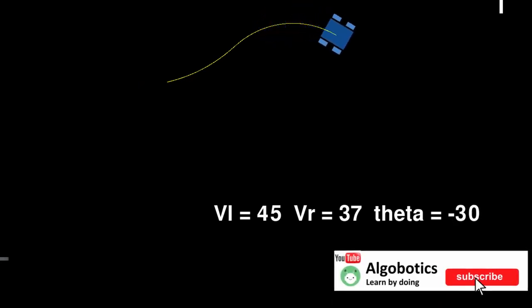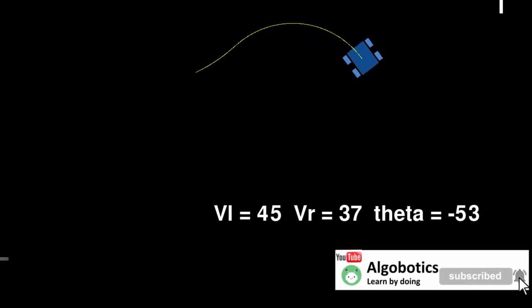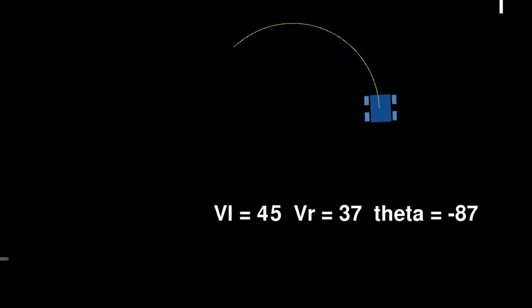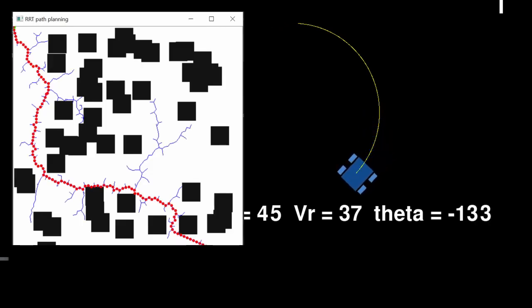It can move in the environment either controlled manually by the user using keyboard strokes, or we can use path planning algorithms like the one we simulated in a previous video to navigate the map and avoid obstacles autonomously.